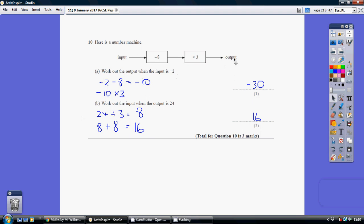Now part b is a bit trickier. We've got to work from output to input, so we've got to work backwards and do the opposite. Starting with our 24, don't multiply by 3, but divide by 3. That gives us 8. And taking that 8, don't take away 8, add 8 instead, giving us 16. So our input would be 16.